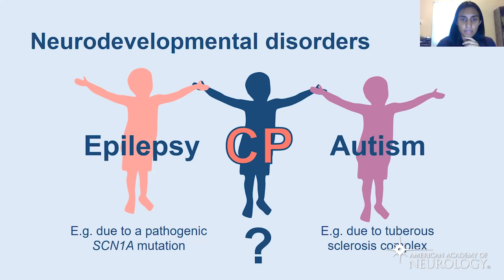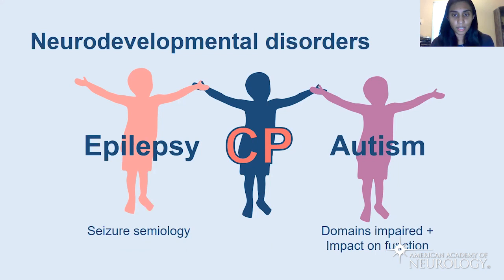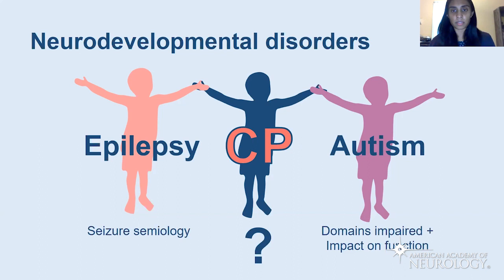When we describe epilepsy, we describe seizure semiologies. When we describe autism, we describe the functional impact — in fact, it's a required diagnostic item in DSM-5 criteria. We should do the same with CP. CP is due to a genetic mutation or this etiology, and then we describe the functional impact. If we can do this with epilepsy and autism, we should be able to do this with CP.